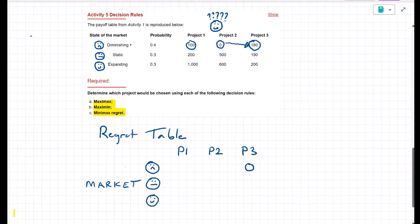However, if I choose project two, well, I missed out on 180. I made the wrong decision. That cost me 180. And then for project one, if I choose project one and the market turns out to be diminishing, well, I lost out on 80. That is how we build the regret table.